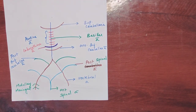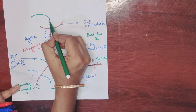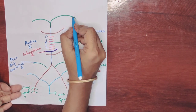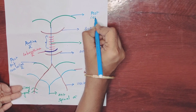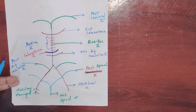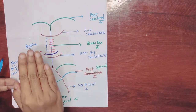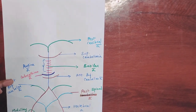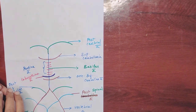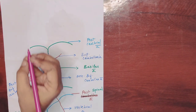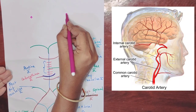The basilar artery is divided into two arteries — one on the left side and one on the right side — which are called the posterior cerebral artery. The blood supply of the brain runs horizontally at the base of the brain. This hexagon shape forms the Circle of Willis.